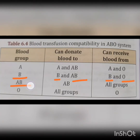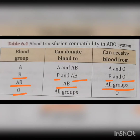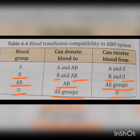Blood group AB can donate blood only to blood group AB, and it can receive blood from all groups: A, B, AB and O. Blood group O can donate blood to all groups — A, B, AB and O — but it can receive blood only from blood group O. That is why blood group AB is called the universal recipient, as it can receive blood from all blood groups.